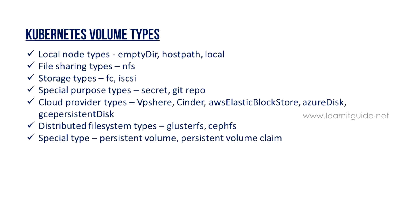For local node types, there is the emptyDir type. If you use an emptyDir, volumes will not store data permanently — data only persists while the pod is running. If the pod is deleted, the data is gone. For a local node type such as hostPath, as the name says, if a node is running, you will use a specific path on that node. We use hostPath and local type for single-node clusters.